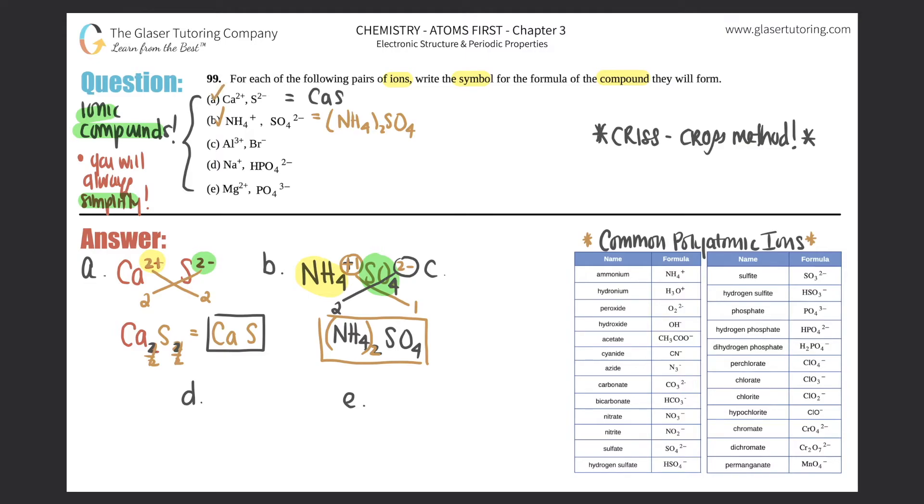c: We have Al³⁺ coming together with Br⁻. They didn't say specifically what number, so we assume it's a minus one. This is just two different atoms: aluminum and bromine. Criss-cross down: the three tells me I need three bromines, the one tells me I need one aluminum. So it would be Al₁Br₃.